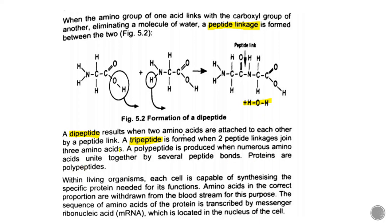Proteins are polypeptides. When many amino acids come together, our proteins are attached via peptide linkages. Protein is not a dipeptide or tripeptide — it is a polypeptide. When we eat polypeptides, our body uses enzymes to break them down into di- and tripeptides, which are then absorbed in the intestines.